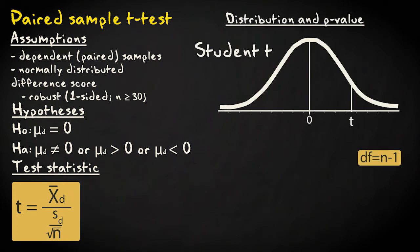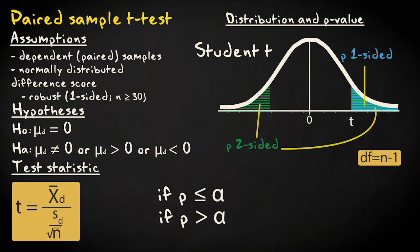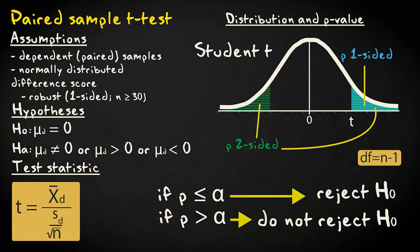The test statistic follows a Student t distribution with degrees of freedom equal to the sample size minus 1. With the test statistic and the degrees of freedom, we can calculate or look up the accompanying one-sided or two-sided p-value, and compare it to the predetermined significance level. Based on this outcome, we reject or fail to reject the null hypothesis.